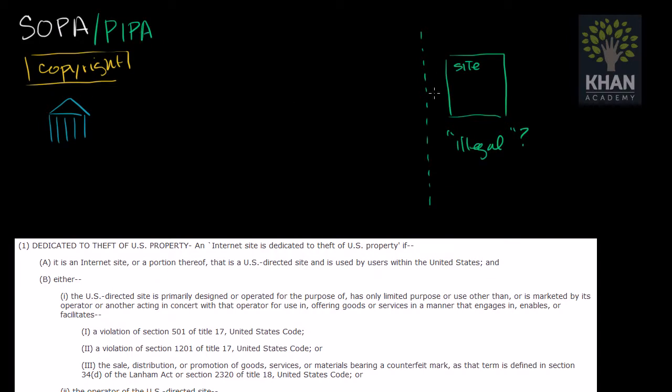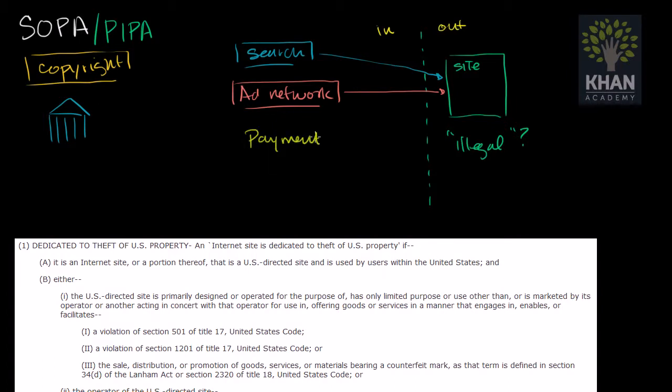And what it does is, if you can't go after this site itself, maybe you can go after sites that are somehow benefiting this site, and those sites are inside the United States. So this is outside, this is inside the United States. So things that are doing that might include search engines, so search engines like Google or Bing. They obviously link to this site over here. You might have ad networks, so sites that allow this site over here to display ads and get revenue from them.